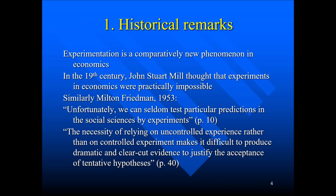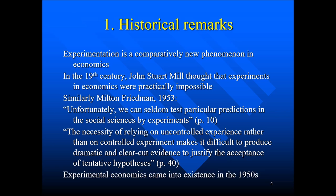Friedman drew consequences: economics was in a somewhat unfortunate position due to the necessity of relying on uncontrolled experience rather than controlled experiment. That necessity makes it difficult to produce dramatic and clear-cut evidence to justify the acceptance of tentative hypotheses. This reflects the idea that in physics you can have crucial experiments deciding between competing hypotheses — something that, until the 1950s, people believed did not exist in economics. Experimental economics emerged around that time.